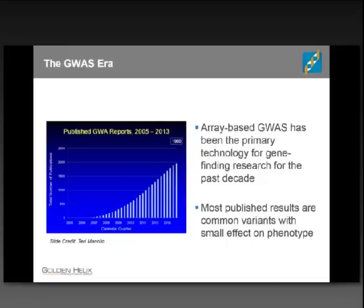GWAS, as hard as it might be to believe, has been around for over a decade. For most of the past 10 years, it's been the go-to technology for gene-finding research — if you have a disease and want to find the genes that drive it, GWAS has been probably the most popular approach. When you look at what has been published, most results in the literature are relatively common variants that have a pretty small effect on the phenotype.